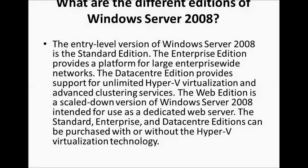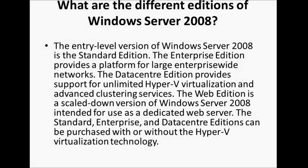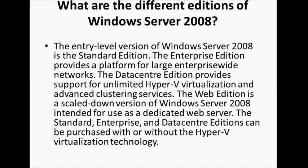What are the different editions of Windows Server 2008? The entry-level version is the Standard Edition. The Enterprise Edition provides a platform for large enterprise-wide networks. The Data Center Edition provides support for unlimited Hyper-V virtualization and advanced clustering services. The Web Edition is a scaled-down version intended for use as a dedicated web server. The Standard, Enterprise, and Data Center editions can be purchased with or without the Hyper-V virtualization technology.